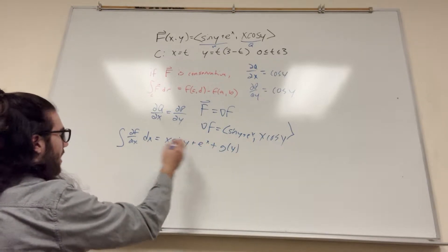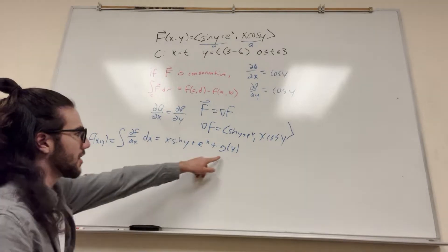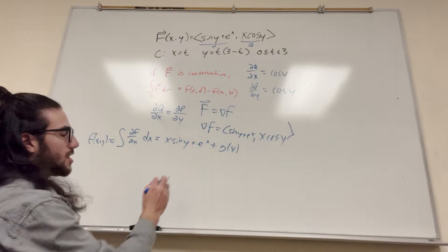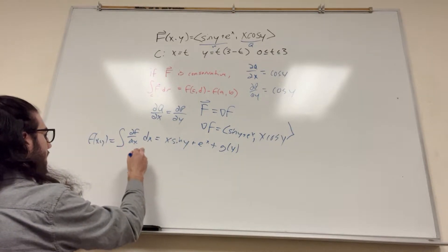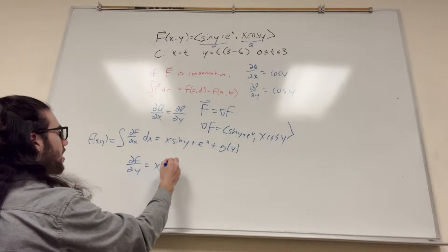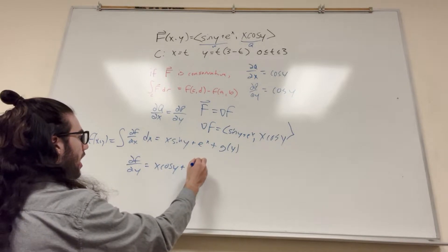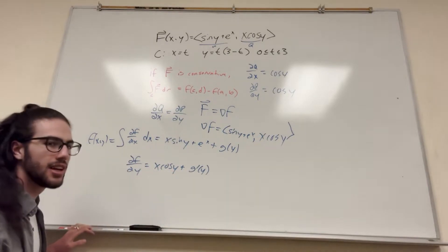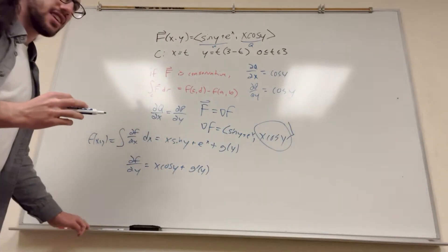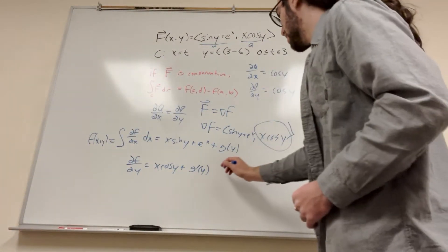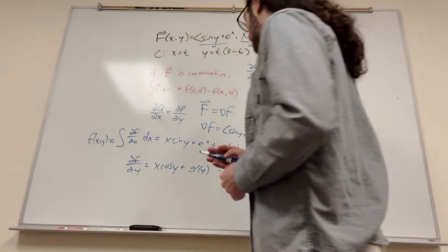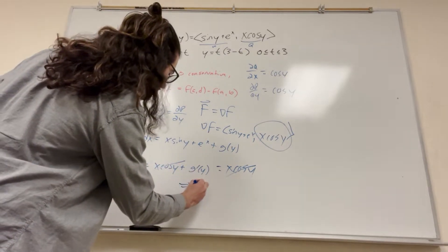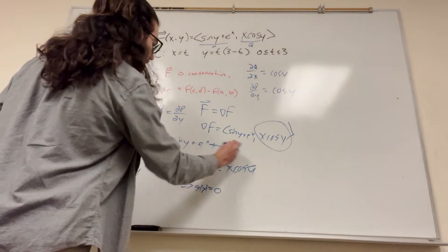So now we have our function f of x, y equal to this. But we have this g of y, and we need to figure out what it is — it could be a number, it could be anything. Let's take the derivative of f with respect to y now. It's going to be x cosine of y, and then e to the x disappears, plus g prime of y. We also know that the derivative of f with respect to y equals x cosine of y from our original field. So those cancel out and g prime of y equals zero, which means g of y equals zero.